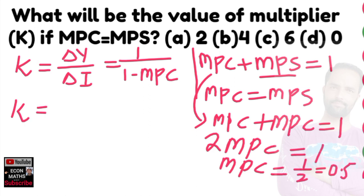Then our multiplier will be equal to 1 upon 1 minus the value of MPC we derived as 0.5. So 1 minus 0.5 comes out to be 0.5.